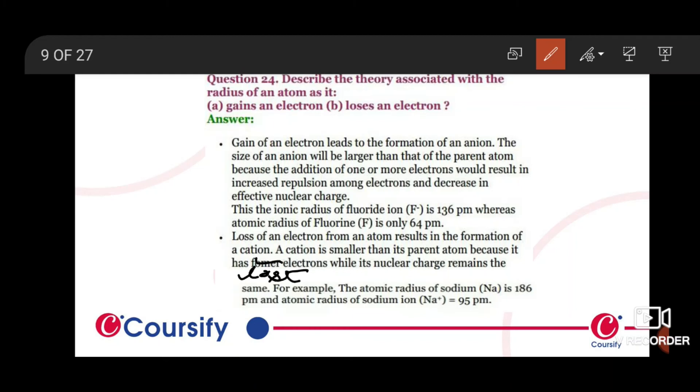So what happens is that the attraction is stronger when one electron is lost and the size of cation is smaller. Loss of electron leads to formation of a cation and decrease in the size.